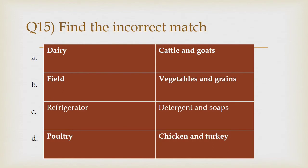Question number 15. Find the incorrect match. Option A: Dairy, cattle and goats. Option B: Field, vegetables and grains. Option C: Refrigerator, detergent and soaps. Option D: Poultry, chicken and turkey.